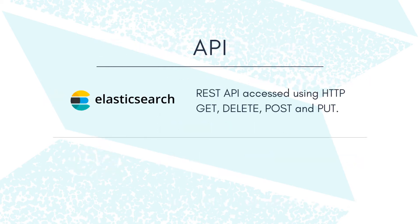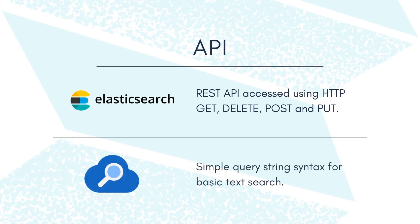Moving to APIs, Elasticsearch exposes a REST API which can be accessed using HTTP GET, DELETE, POST and PUT methods. Azure Search utilizes simple query string syntax for basic text search, but needs engineering to handle more structured queries.